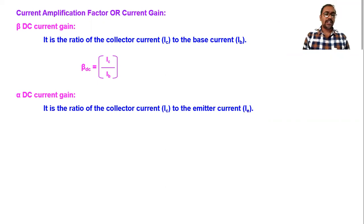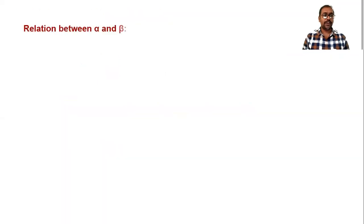Now, alpha is the ratio of collector current to emitter current. The formula for alpha is α = Ic / Ie. Now we have to obtain the relation between these two — alpha and beta.